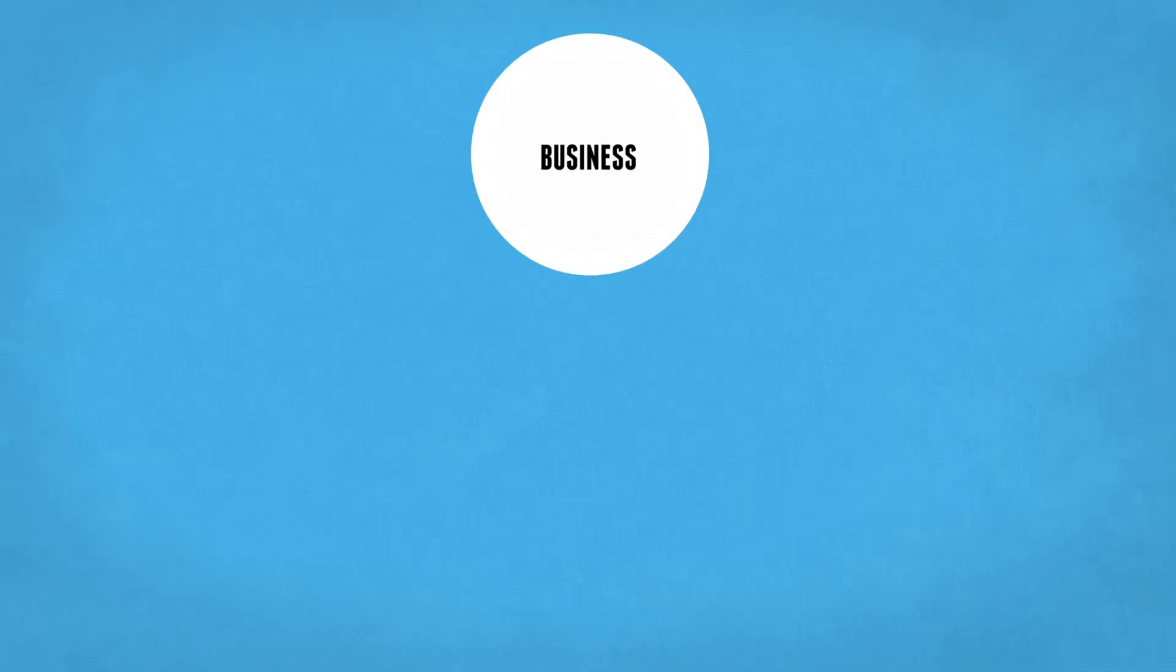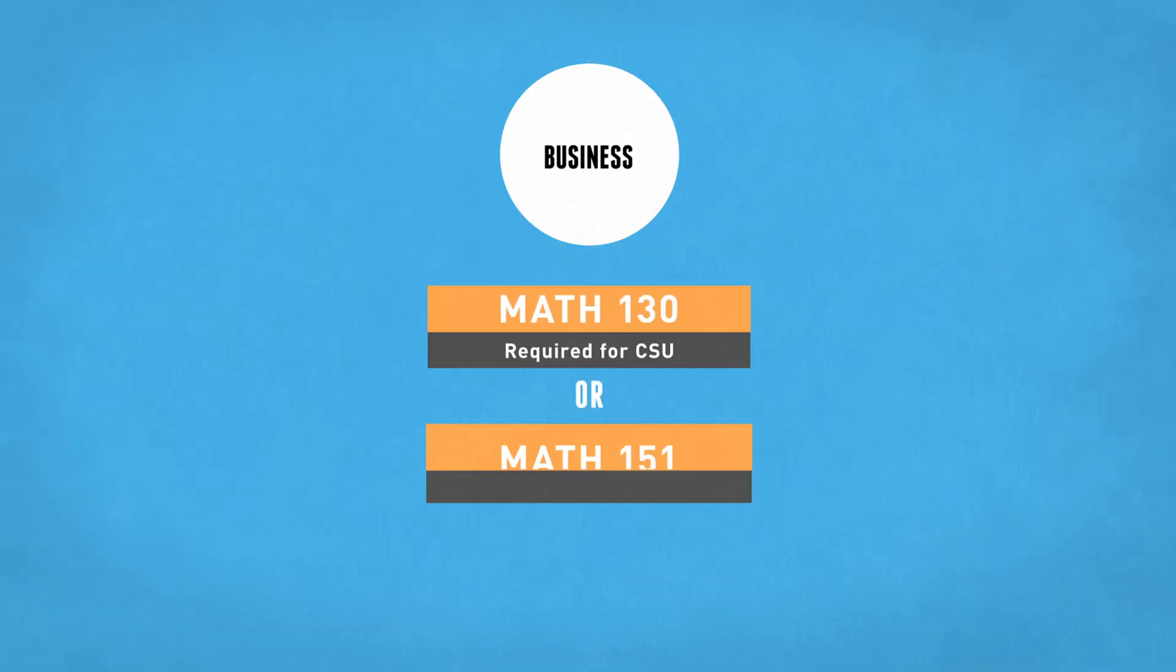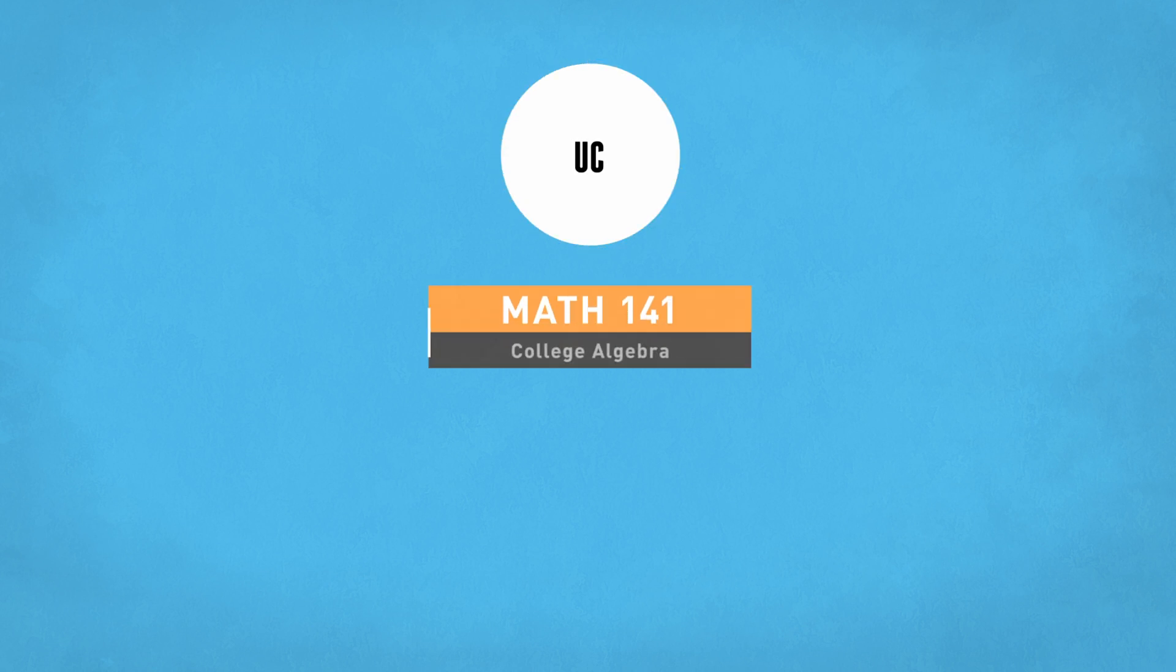Business majors will need a higher level of math, which includes Math 130 for CSU or Math 151 for UC transfers. If UC is your desired goal, you would most likely start in Math 141 or Math 142.